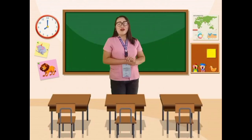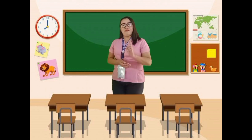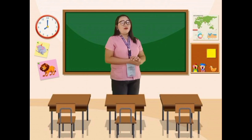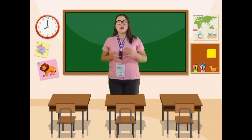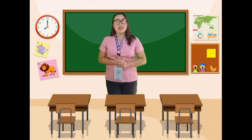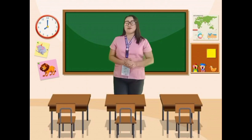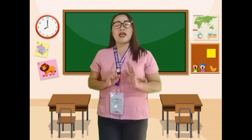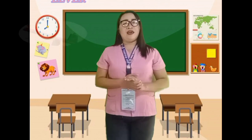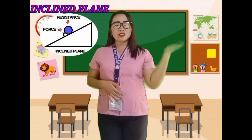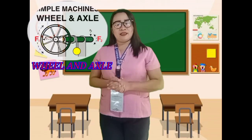Where do you think we can find simple machines? Very good! Simple machines can be found anywhere. We can see them in our home, in school, at the mall, and even at the playground. Did you know, class, that there are types of simple machines? Yes! There are six types of simple machines: the lever, pulley, inclined plane, wedge, screw, and wheel and axle. Let us discuss them one by one.